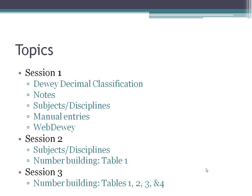Today, session one is just going to be a general overview. We'll talk about what the Dewey Decimal Classification is, some of the notes you'll see as you go through the schedules, the idea of subjects versus disciplines, manual entries that will help you choose numbers to assign, and then we're going to discuss WebDewey, which is OCLC's online version of Dewey. You'll get a trial login to use WebDewey for this class if you don't have a print version.